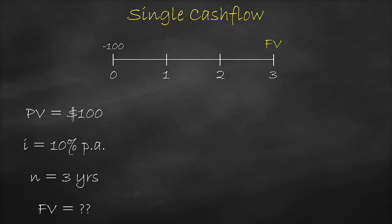Please note that in all time value of money questions, the interest rate and the number of periods must have the same time unit. This means that if the interest rate is annual, we should express the number of periods in years. If the interest rate is monthly, we should express the number of periods in months, and so on.